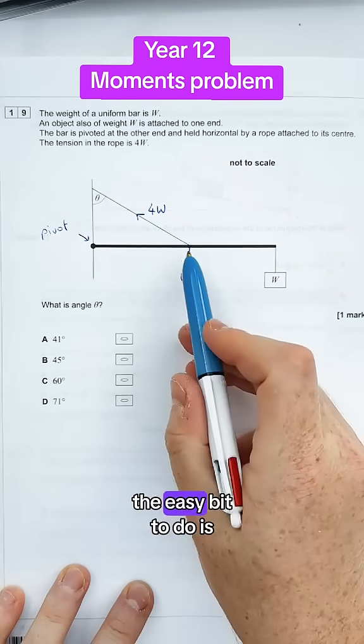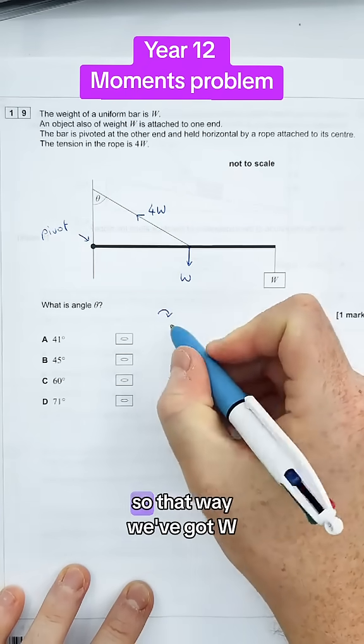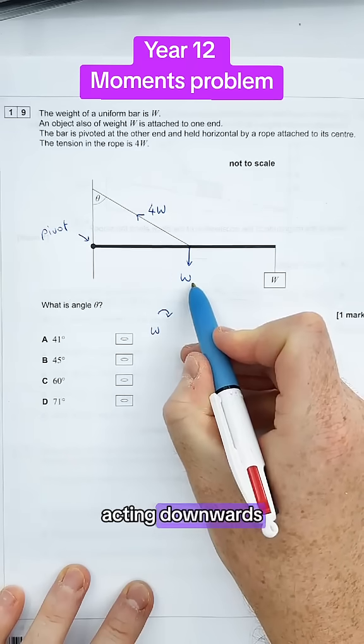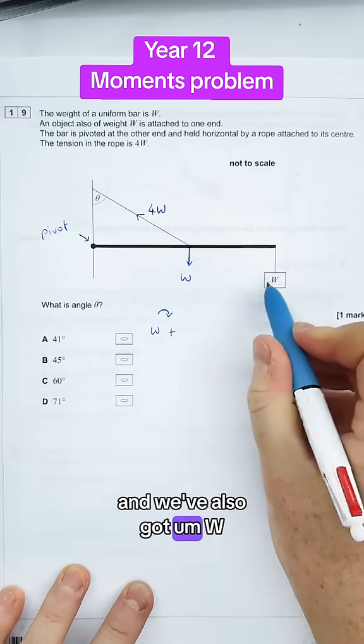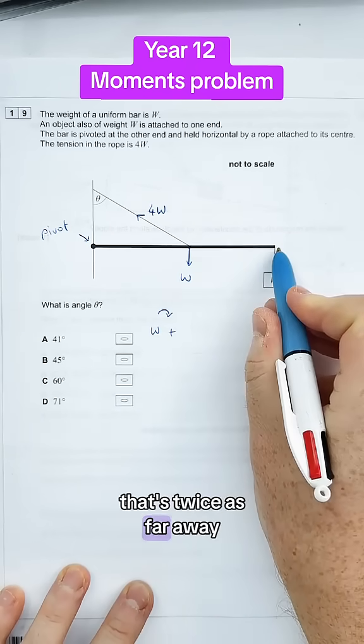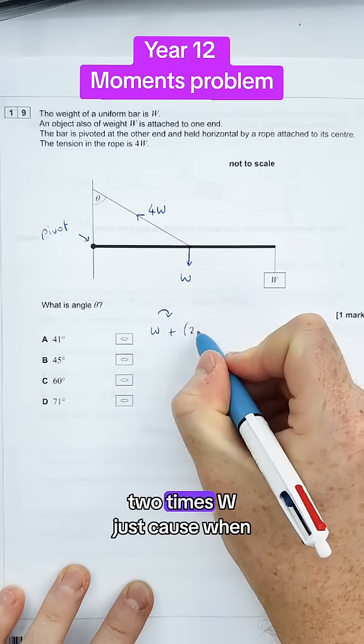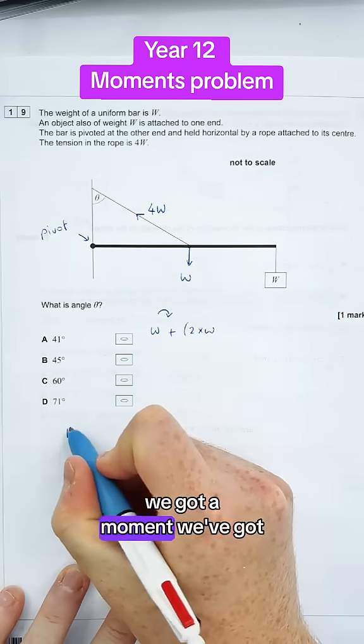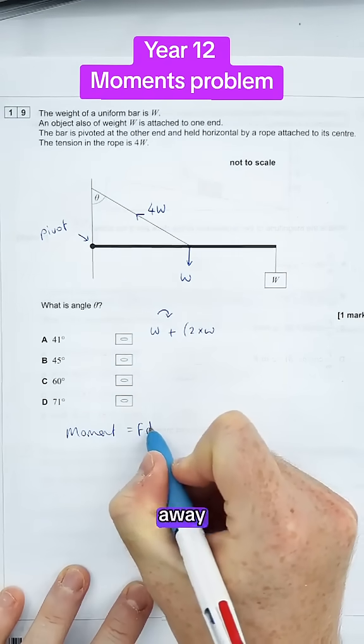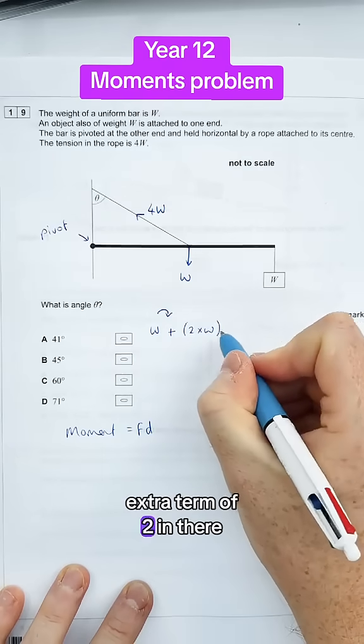So let's set this up first of all. The easy bit to do is the clockwise moments. So that way we've got W acting downwards, and we've also got W that's twice as far away. So I'm going to call that basically 2 times W, just because when we've got a moment, we've got force times distance. So if it's twice as far away, we have to then add an extra term of 2 in there.